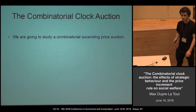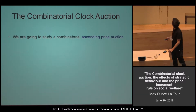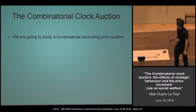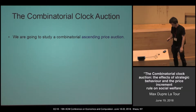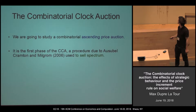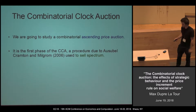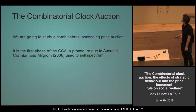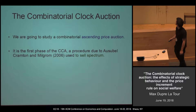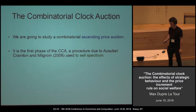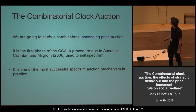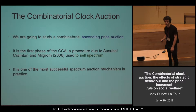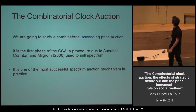The Combinatorial Clark Auction is an ascending price auction. That is the first phase of a procedure designed by Hauserberg, Frampton, and Bilbo. It is used to sell spectrum. In practice, this is one of the most used and most successful spectrum mechanisms.